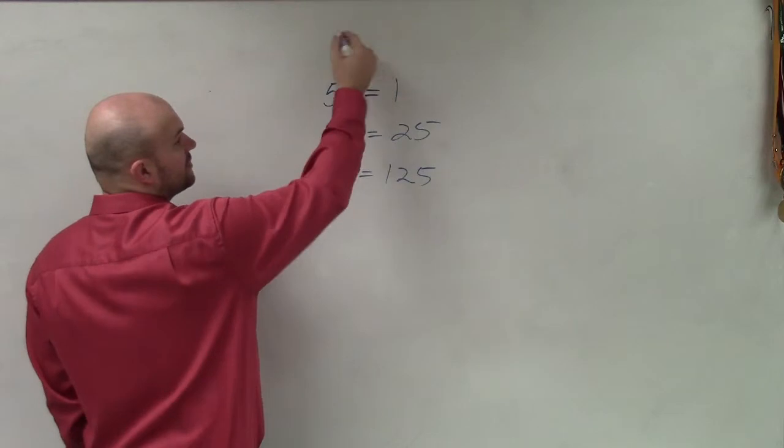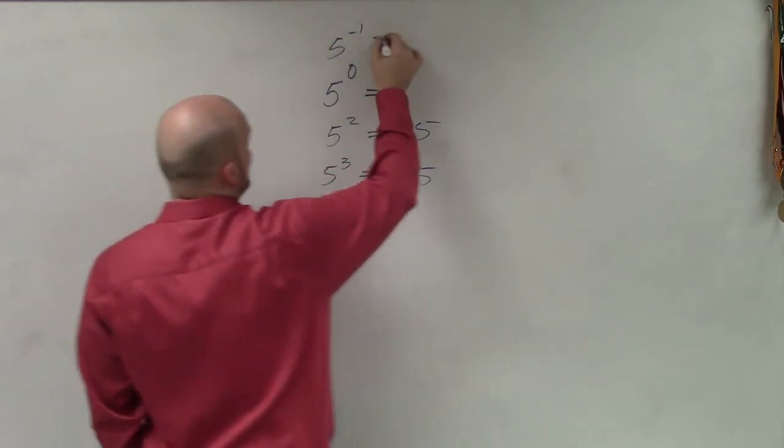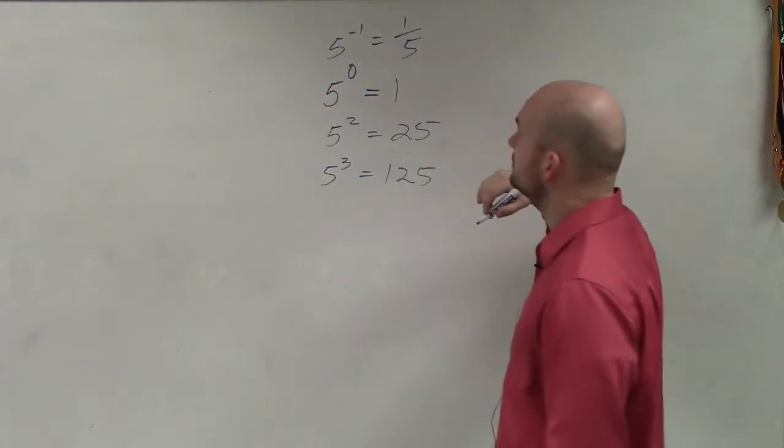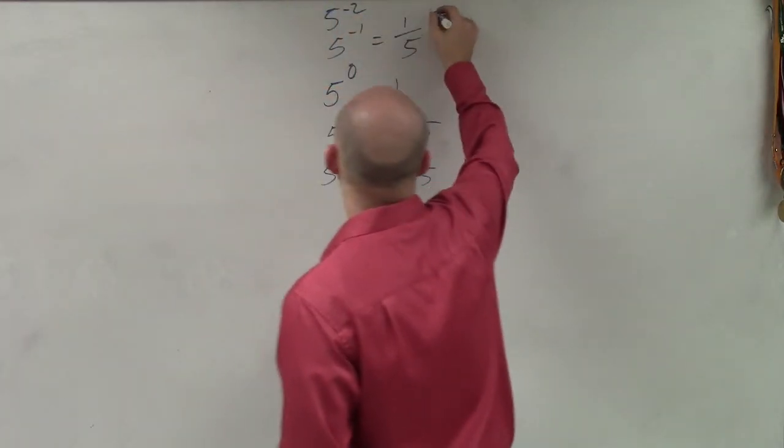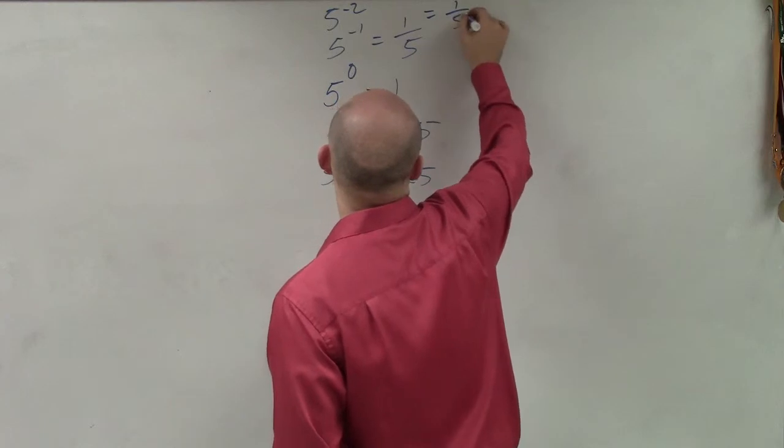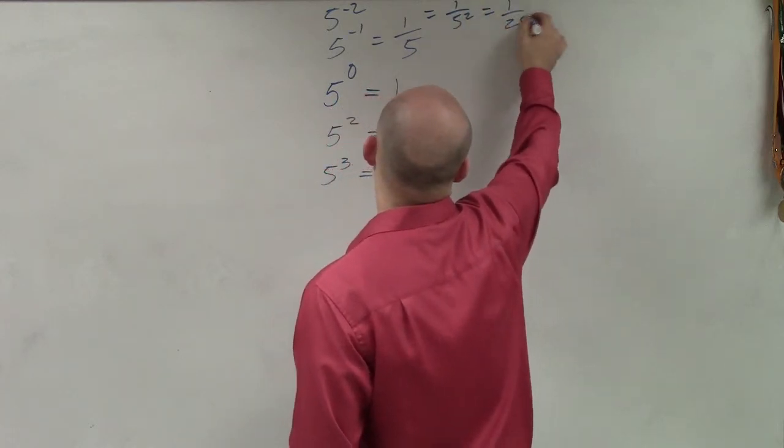If you're going to go in the negative direction, 5 to the negative 1 equals 1 over 5. And 5 to the negative 2nd is equal to 1 over 5 squared, which equals 1 over 25.